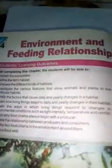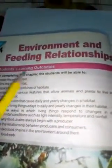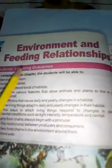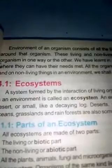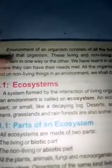Starting chapter number 4. The name of chapter number 4 is Environment and Feeding Relationship. Environment of an organism consists of all the living and non-living things around that organism.